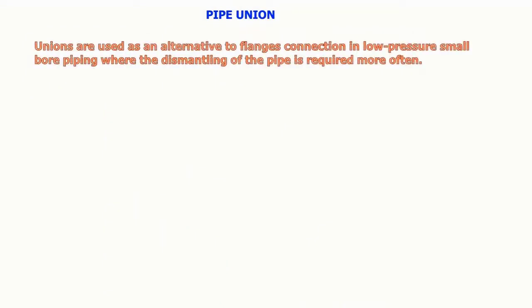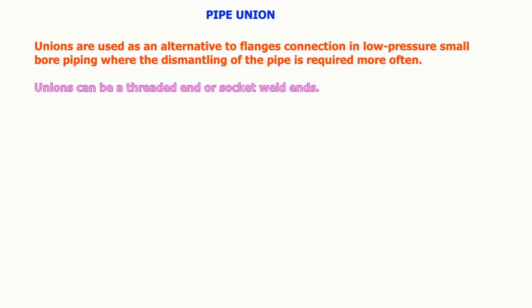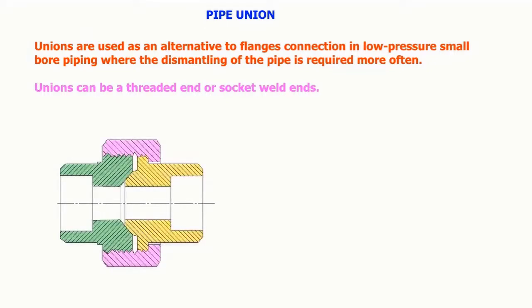Pipe unions are used as an alternative to flange connection in low-pressure small bore piping where the dismantling of the pipe is required more often. Pipe unions can be threaded end or socket weld end.